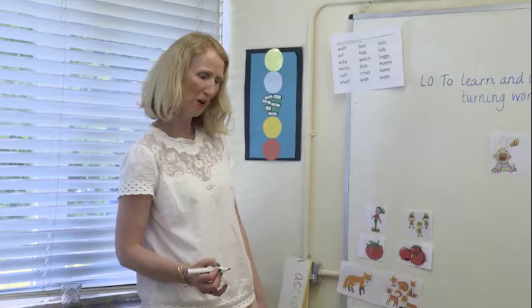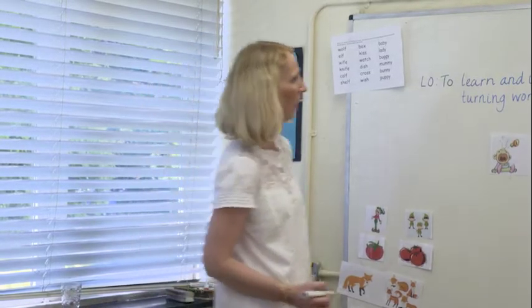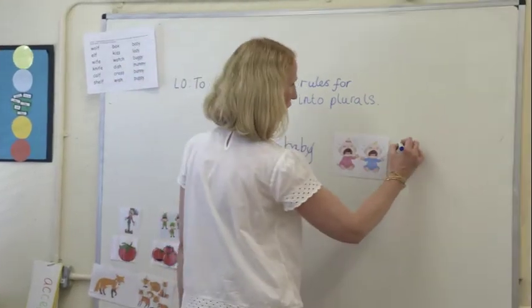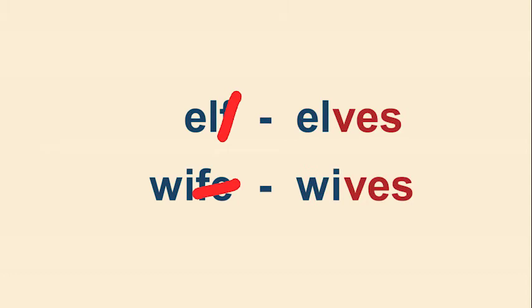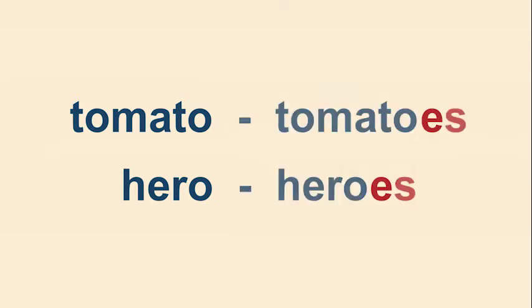In this session, Sarah will be looking at a number of plurals that defy the add-an-S rule. Words with a Y ending, like baby or lady, where the plural is IES. Words that end with an F sound, like elf or wife, where the plural is VES. Words that end in an O, like tomato or hero, where the plural adds an E before the S. And other unusual words like fox, where also an E is added before the S.